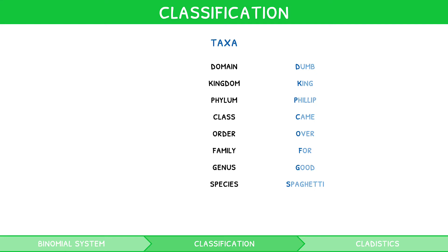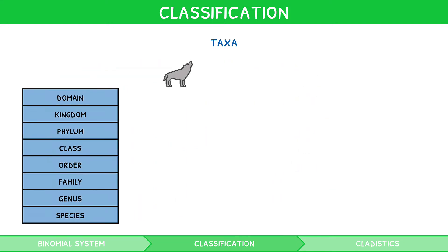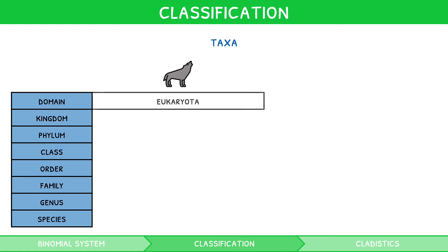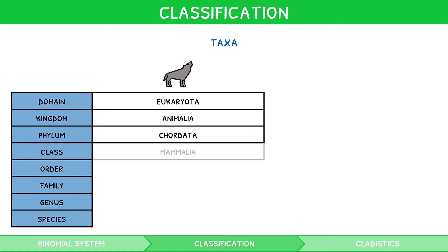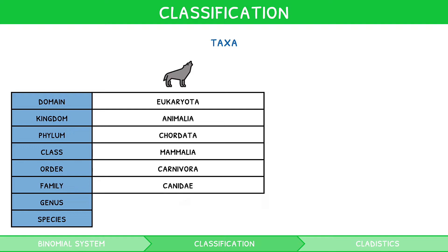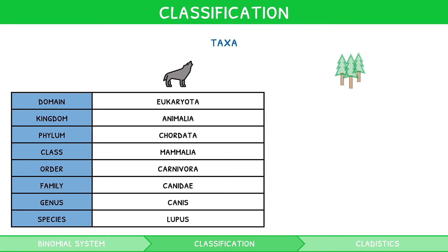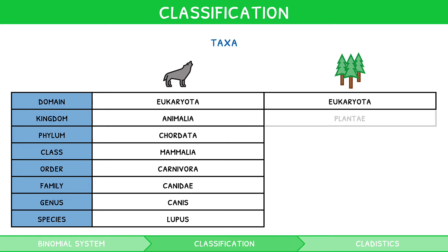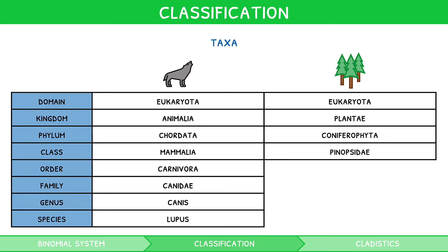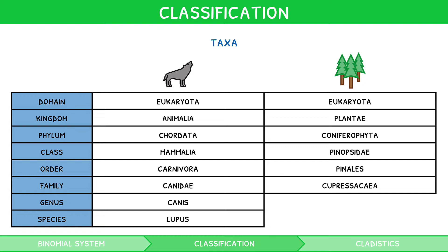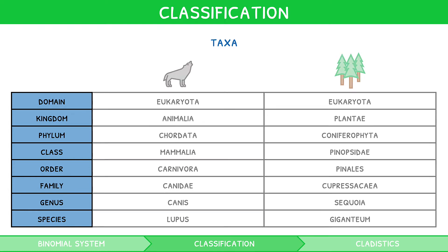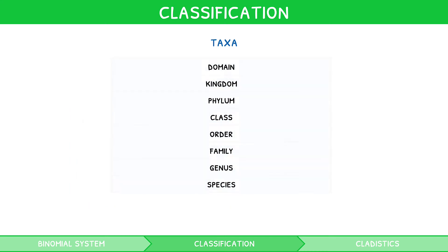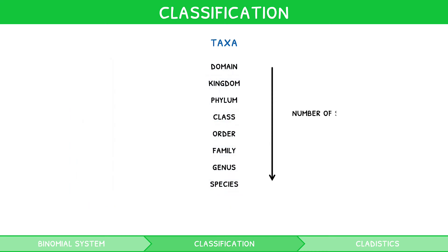The IB expects you to recall an example animal and an example plant for this hierarchy. Continuing our example of a grey wolf, it would be classified accordingly. For a plant, we can use the giant redwood tree, classified as Eukaryota, Plantae, Coniferophyta, Pinopsida, Pinales, Cupressaceae, Sequoia, and giganteum. As you go down the hierarchy, they become more specific. As a result, the number of species decreases, but similarities between species increases.